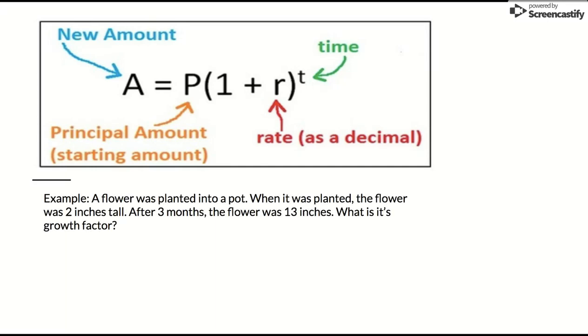Let's use that same example. Again, a flower was planted into a pot when it was planted; the flower was 2 inches tall. After 3 months, the flower was 13 inches. What is its growth factor? So again, we have the growth factor as 0.8461.